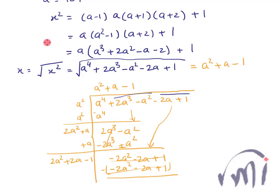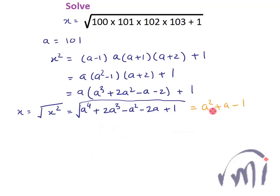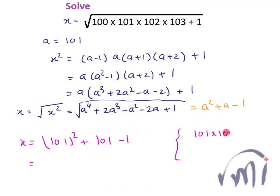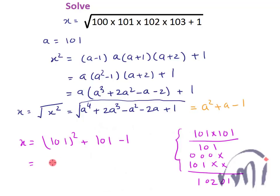Substituting a = 101, x equals 101² + 101 − 1. Now 101 × 101 = 10,201, and 101 − 1 = 100. So x = 10,201 + 100 = 10,301.